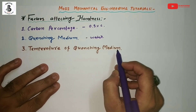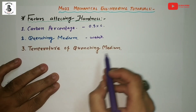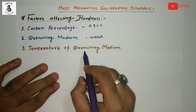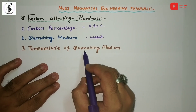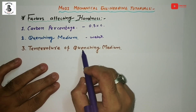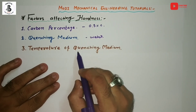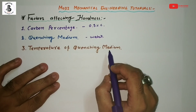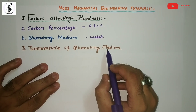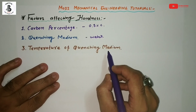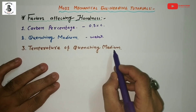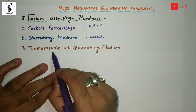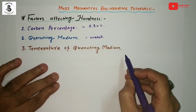Third factor: temperature of the quenching medium. Based on the weight percentage of carbon present in steels — for hypo-eutectoid and hyper-eutectoid steels — the material is heated to the austenitizing temperature range. The behavior of various quenching mediums differs at higher temperatures, resulting in different levels of hardness in the structure. This is the third factor affecting hardness.